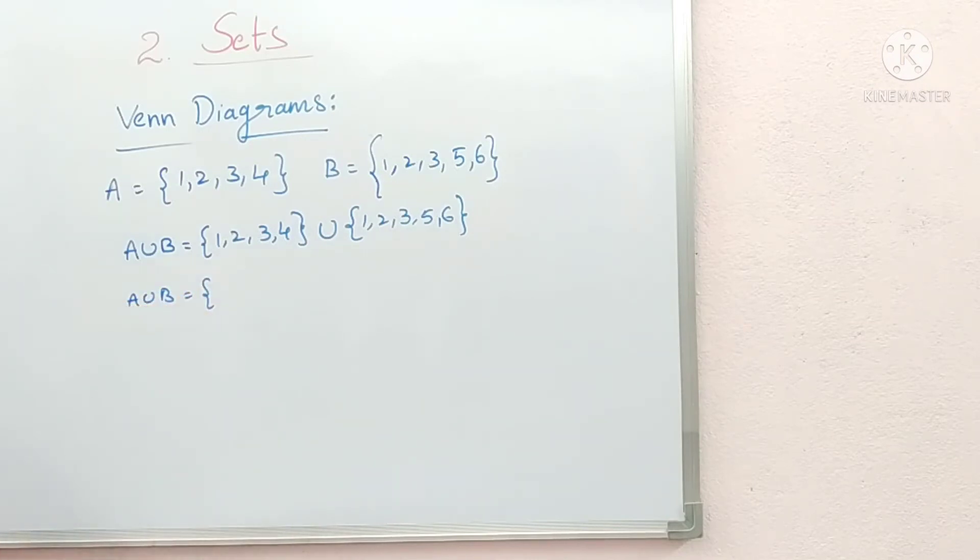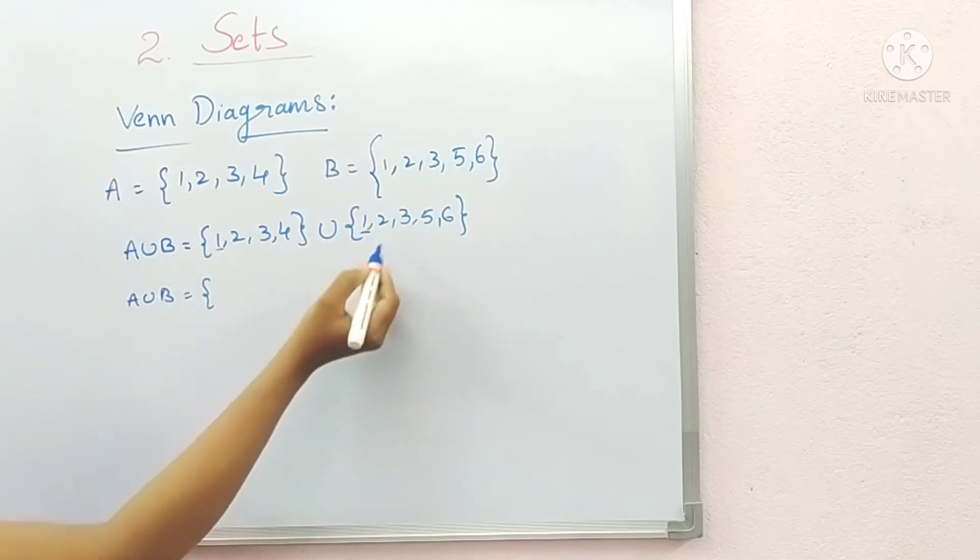We want to mix the elements in both A and B. If any number is in A and B, then we write it only one time. For example, 1 is here and here, so we write 1 only one time.